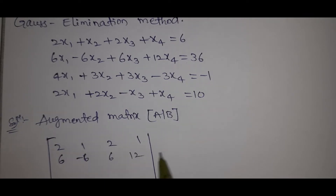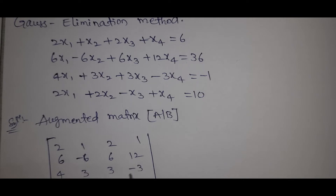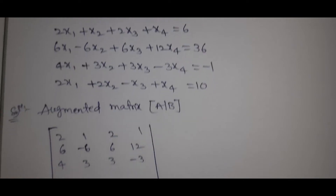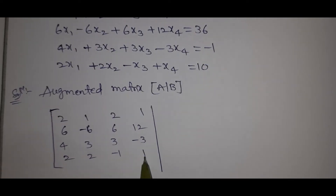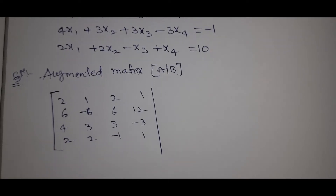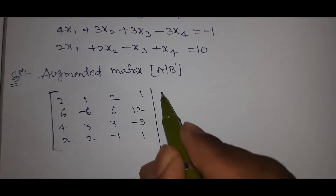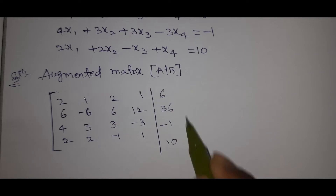Second row: 6, -6, 6, 12. Third row: 4, 3, 3, -3. Fourth row: 2, 2, -1, 1. The RHS column is: 6, 36, -1, 10.